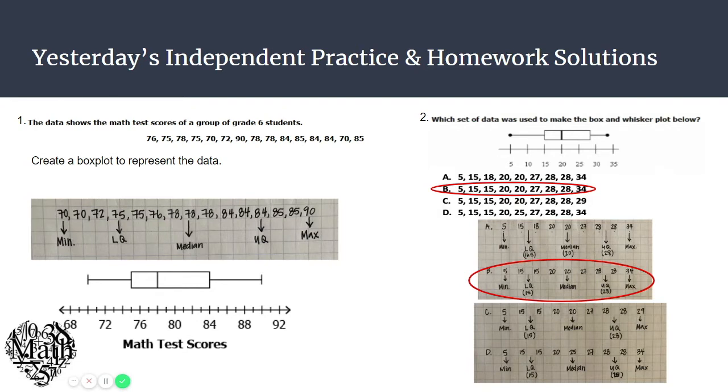Here are the solutions to yesterday's homework. Number one, you needed to create a box and whisker plot. First you put that data in order from least to greatest. Your minimum or lower extreme, as we also call it, was 70.